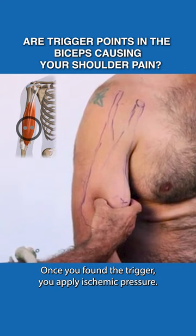Once you've found the trigger, you apply ischemic pressure — finding the pain, reduce pressure, and then slowly increase the pressure until you've turned it off.